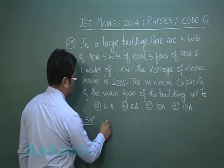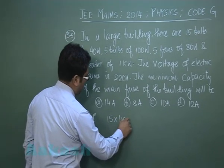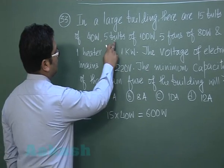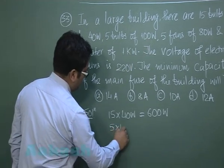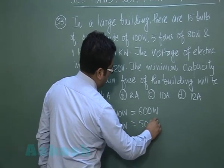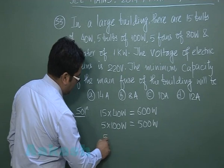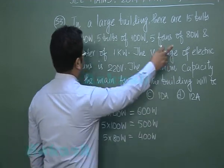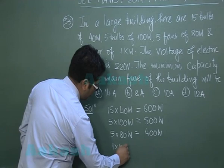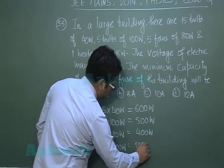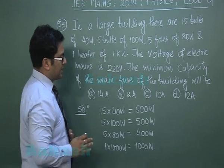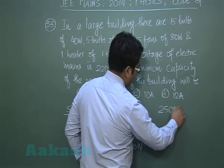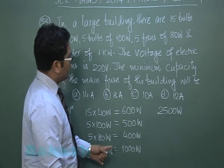Calculating total wattage: 15 bulbs × 40 W = 600 W; 5 bulbs × 100 W = 500 W; 5 fans × 80 W = 400 W; 1 heater × 1000 W = 1000 W. Total wattage consumption = 600 + 500 + 400 + 1000 = 2500 W.